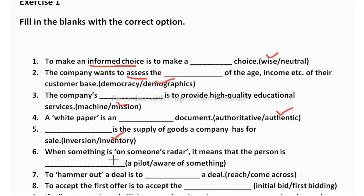The sixth one: when something is on someone's radar, it means the person is blank — a pilot or aware of something? The meaning of on someone's radar is that someone is observing everything, keenly aware. So aware of something is the correct answer. You should learn these words along with their meanings, as well as the words from your textbook pages 110 to 111.